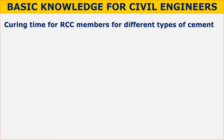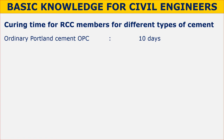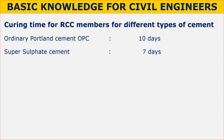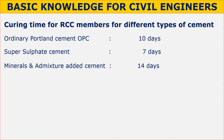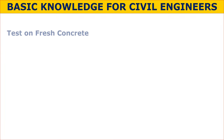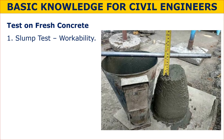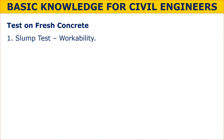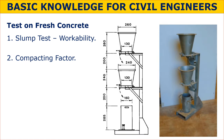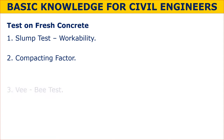Curing time for RCC members varies by cement type: Ordinary Portland Cement (OPC) requires 10 days, Super Sulfate Cement requires 7 days, and mineral/admixture-added cement requires 14 days. Tests on fresh concrete include: the slump test for workability, the compacting factor test, and the Vebe (VB) test.